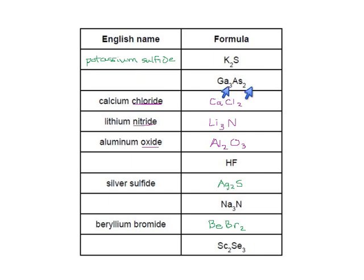This one, Ga3As2. This is gallium. This is arsenic. So, gallium. And you start writing arsenic, but instead you change the ending to ide. Gallium arsenide. I didn't even look at the three and the two, I don't care.